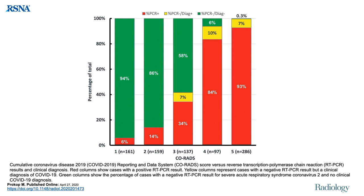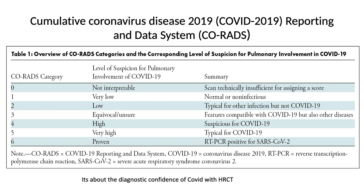The CO-RADS scoring — Cumulative Coronavirus Disease Reporting and Data System — ranges from 1 to 6, with 5 being most likely and 1 being least likely COVID-19. In CO-RADS 1 patients, only 6% turned out to be RT-PCR positive, while in CO-RADS 5, 93% were RT-PCR positive. CO-RADS 0 is a non-interpretable scan and CO-RADS 6 is RT-PCR positive irrespective of CT scan findings.